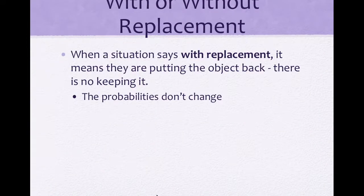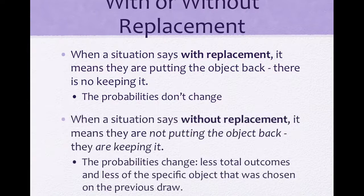When a situation says 'with replacement', it means they are putting the object back — there is no keeping it, and the probabilities don't change. When a situation says 'without replacement', it means they are not putting the object back — they keep it, so there are fewer total outcomes and one less of the specific object chosen on the previous draw.